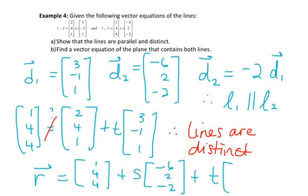So 2 to 1 is -1, 4 to 4 is 0, and 1 to 4 is 3. So there's my last direction, going between the points on the lines.